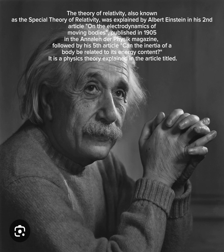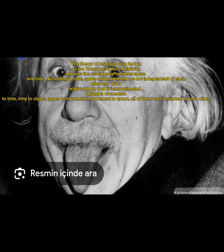The theory of relativity, also known as the special theory of relativity, was explained by Albert Einstein in his second article on the electrodynamics of moving bodies, published in 1905 in the Annalen der Physik magazine, followed by his fifth article: 'Can the inertia of a body be related to its energy content?'